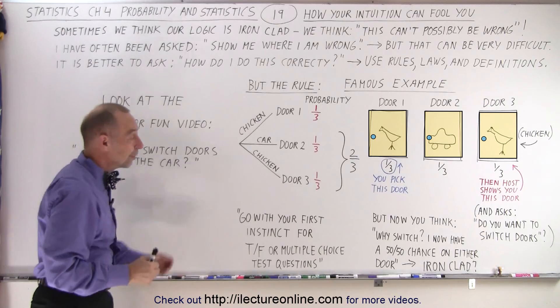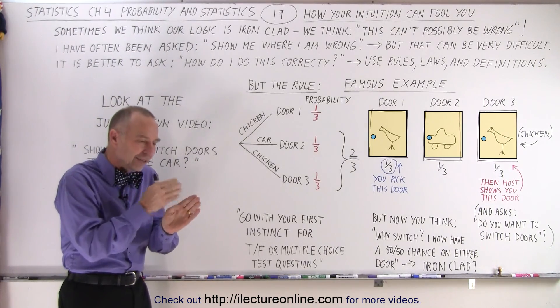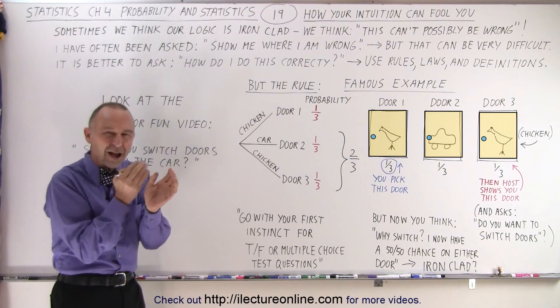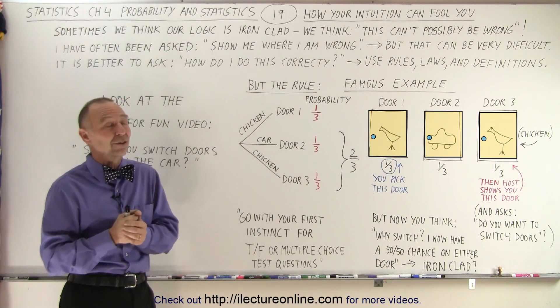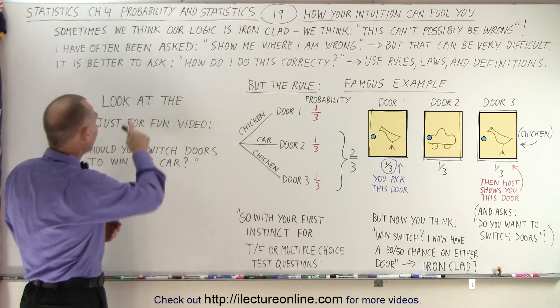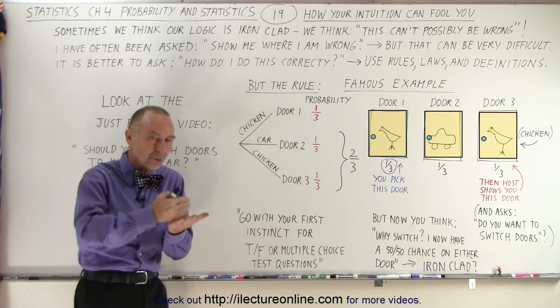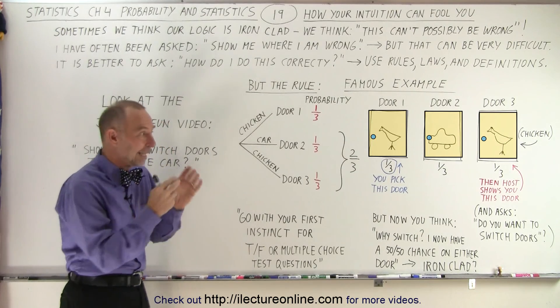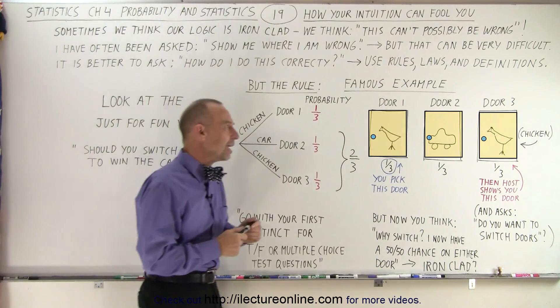When someone asks me well show me where I'm wrong, that's sometimes difficult to do because it's very difficult to pull ourselves out of that logic path that we think is correct even when it isn't. So what should we do instead? It's better to ask how do I do this correctly? What are the rules, the definitions, the laws that I should follow in order to help guide me? So let me tell you a little bit about this game.